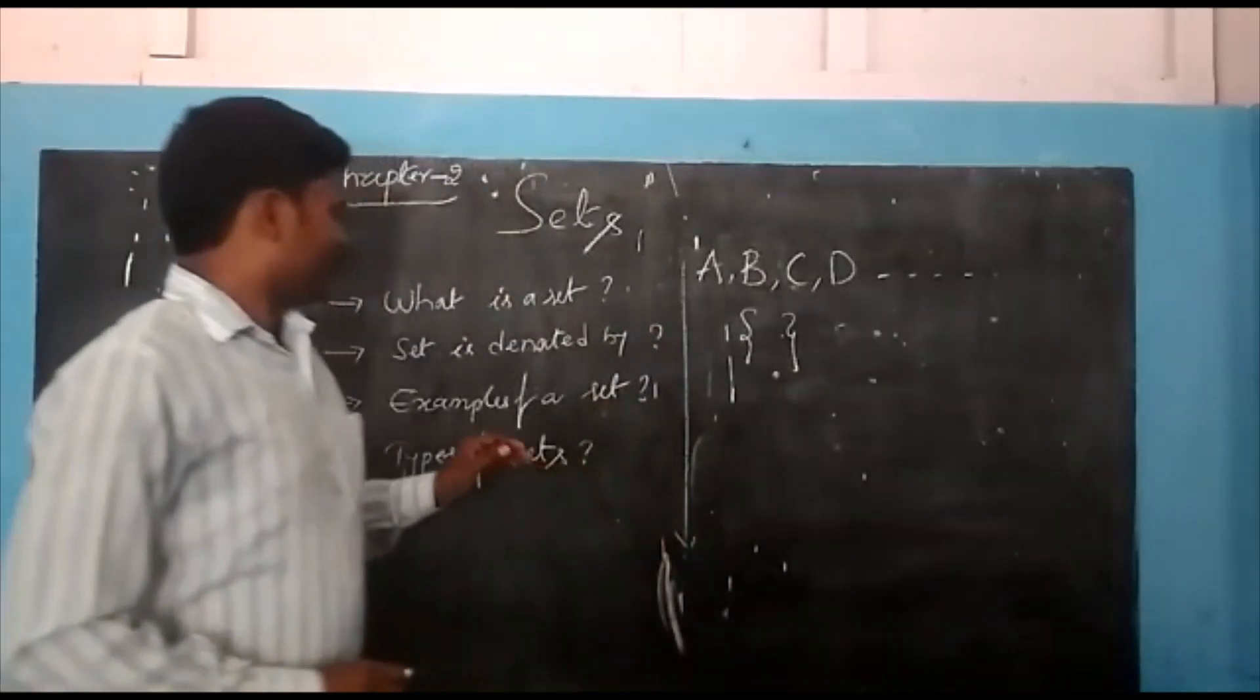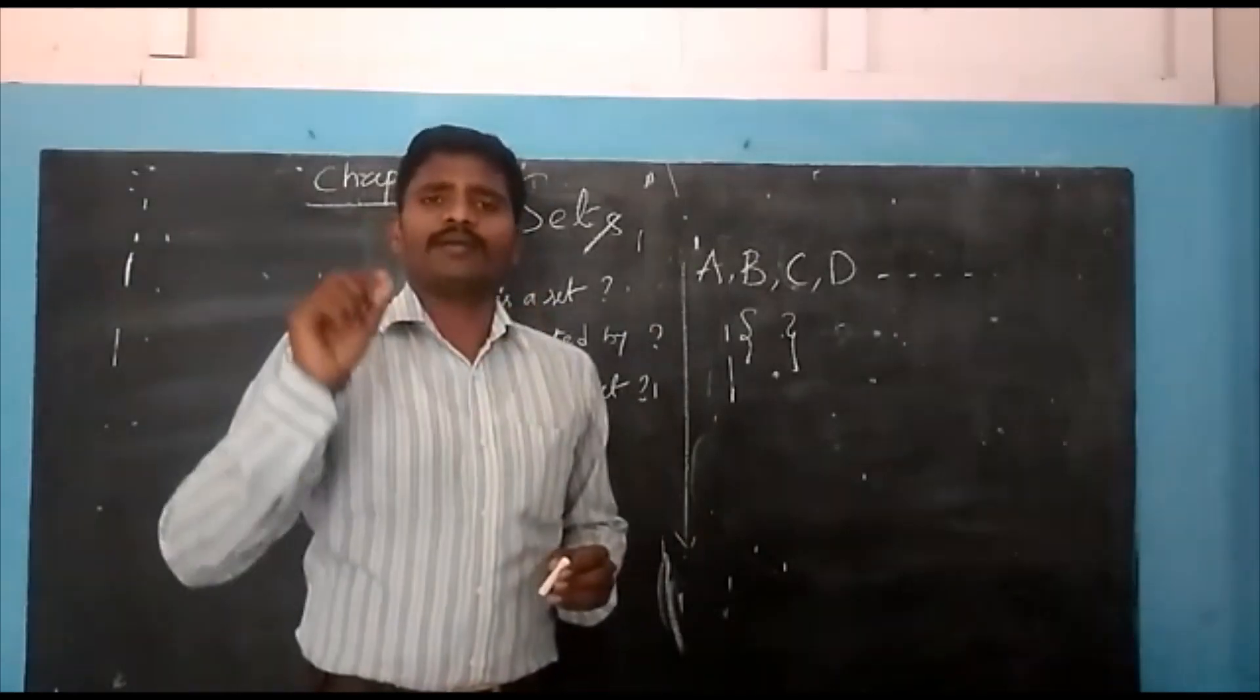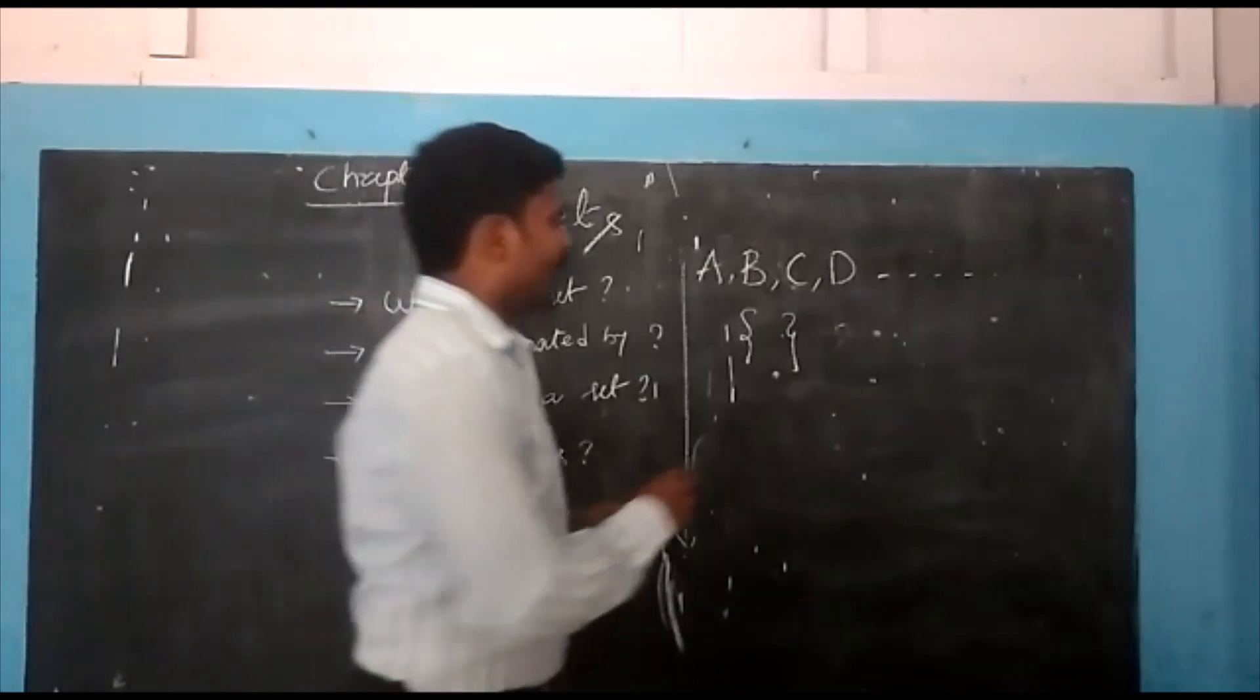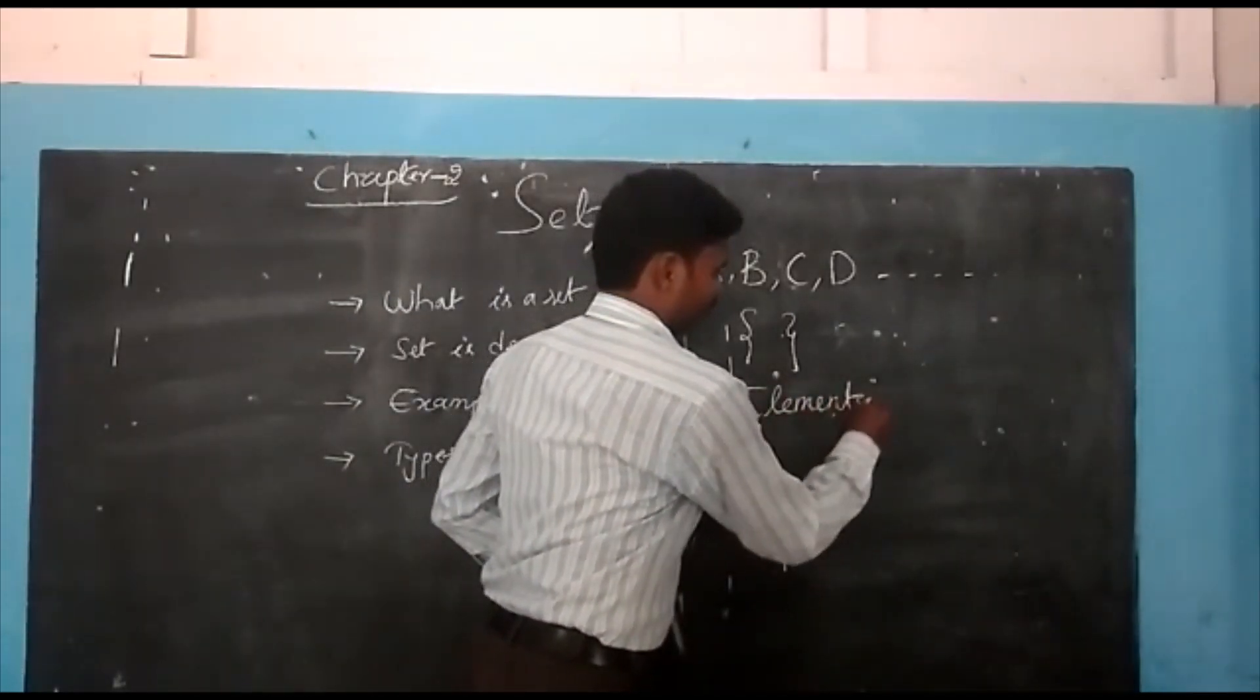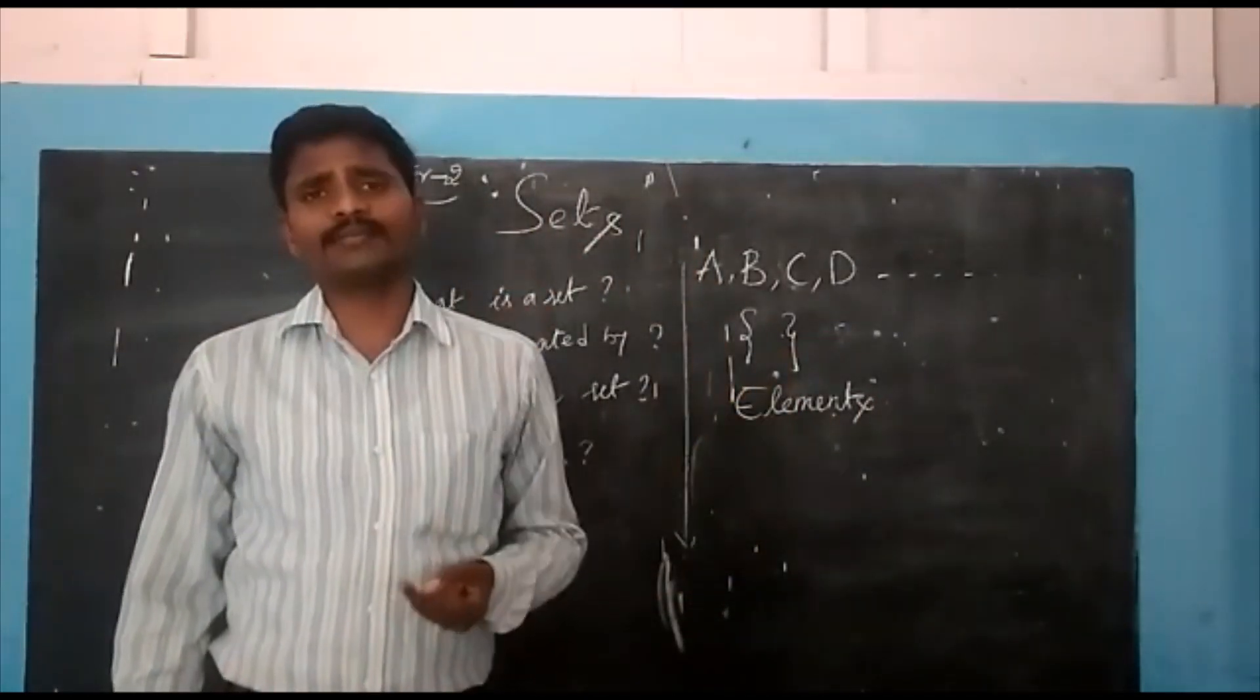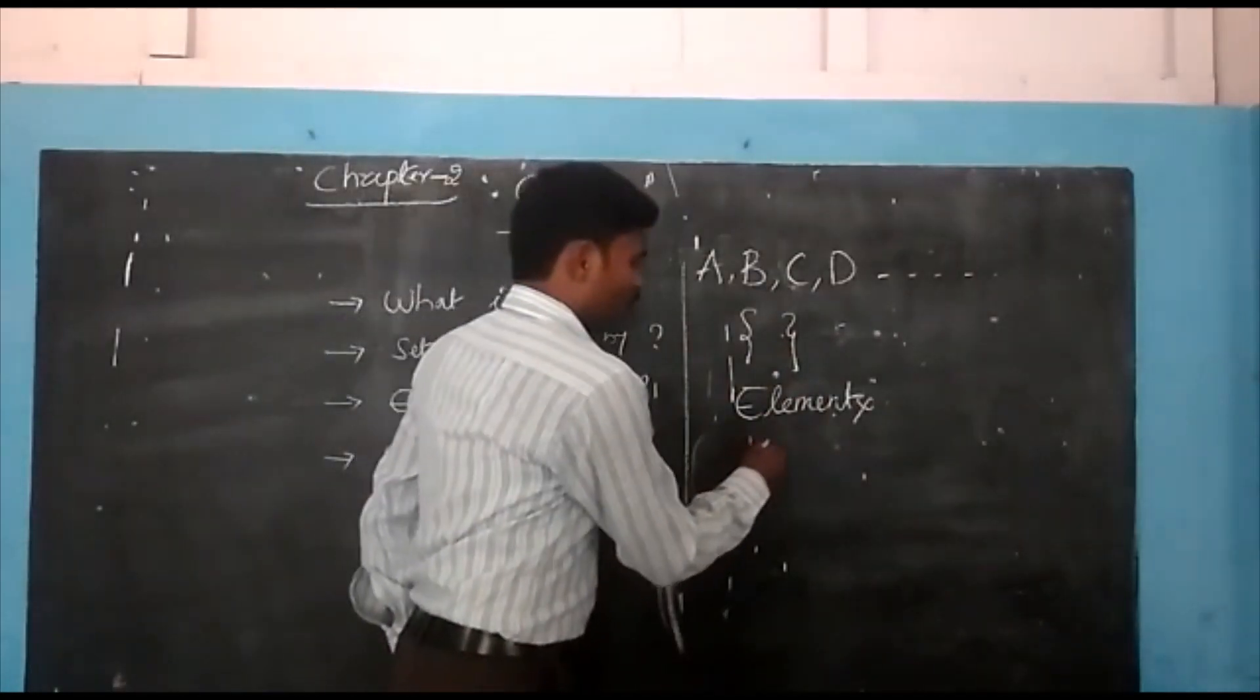Now, in sets, the objects are known as elements. The elements are numbers or lowercase letters, like 1, 2, 3, and so on.